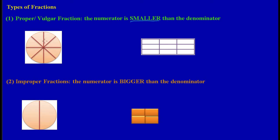I like to use diagrams because they tend to bring across the message a lot clearer. So I could ask you to represent a proper fraction on a diagram — how many parts are in the whole? One, two, three, four, five, six, seven, eight. Since we have eight parts in the whole, we put an eight in the denominator. Now I could ask you to represent three out of eight.